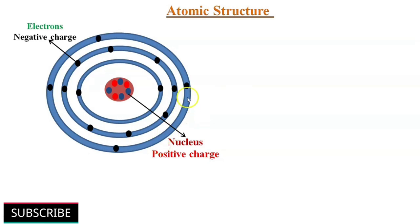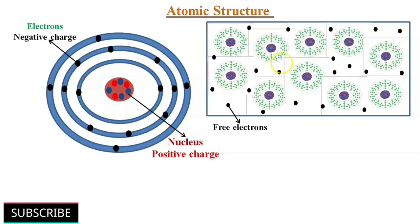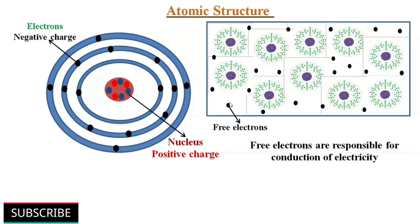The electrons in the outermost orbit are called valence electrons. In certain materials, the valence electrons are loosely attached to the nucleus. Even at normal temperature, some of the valence electrons may come out of the atom's orbit and become free electrons. These negatively charged free electrons are responsible for the conduction of electricity in materials like copper, gold and aluminum, because they have many free electrons.